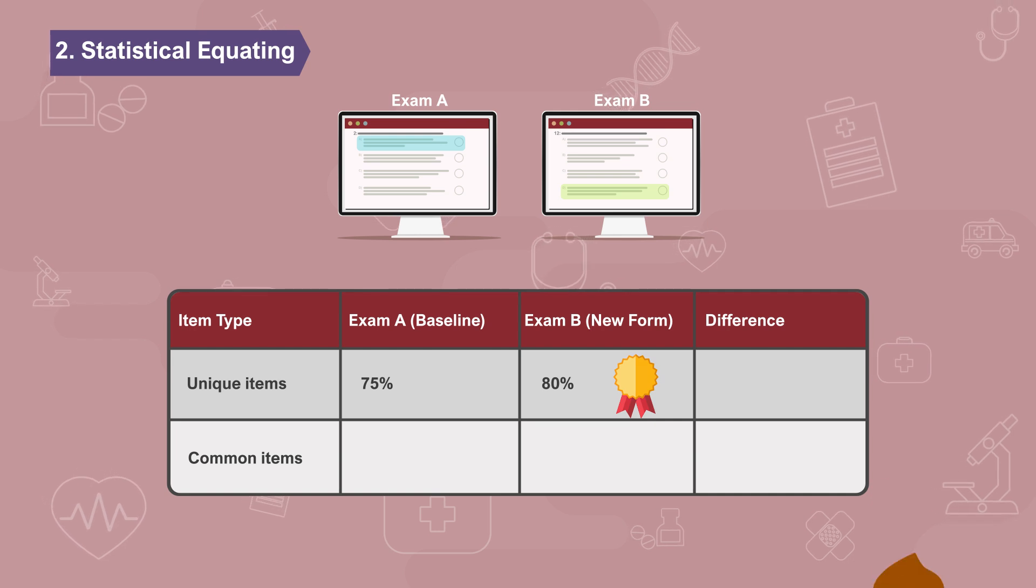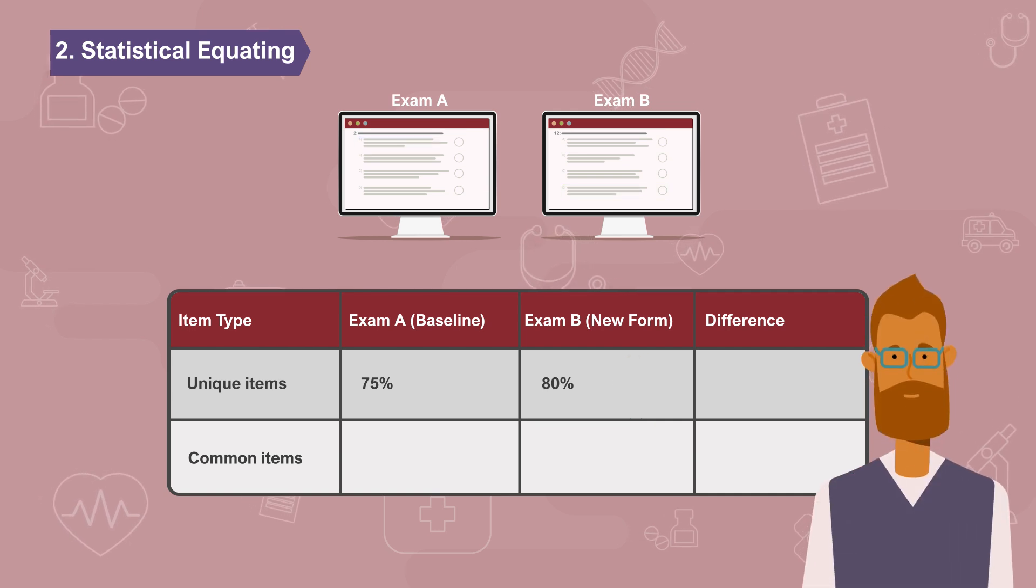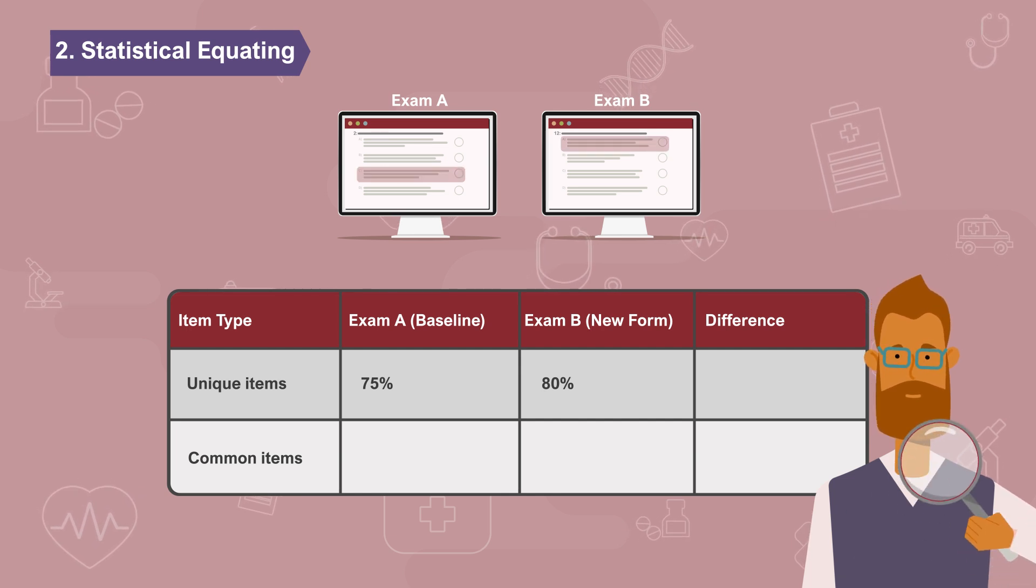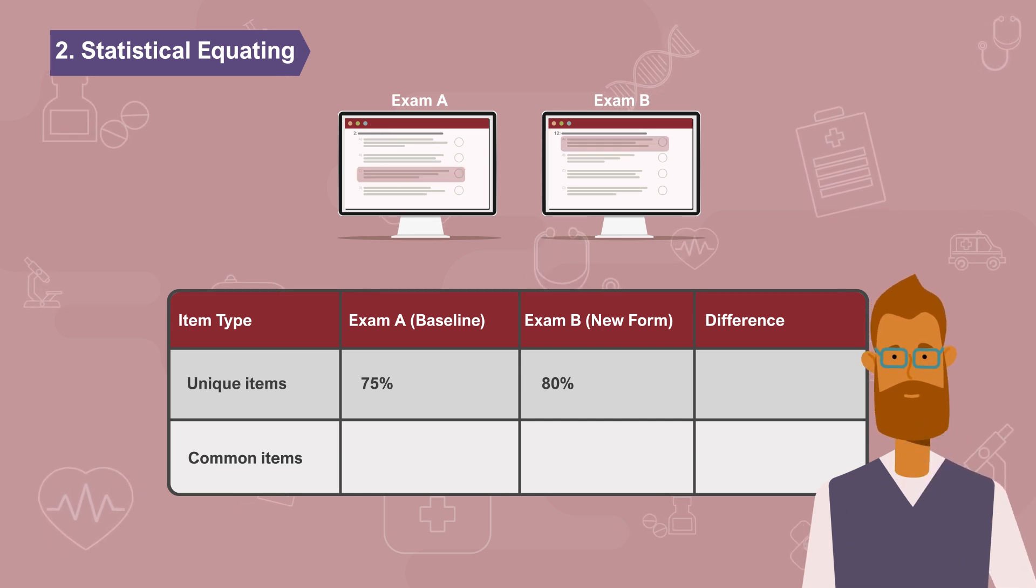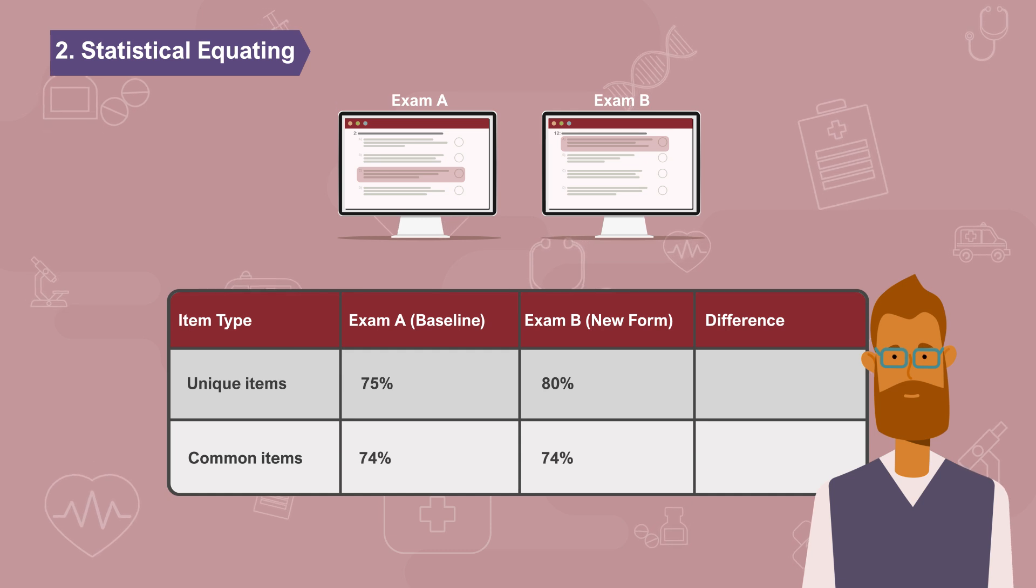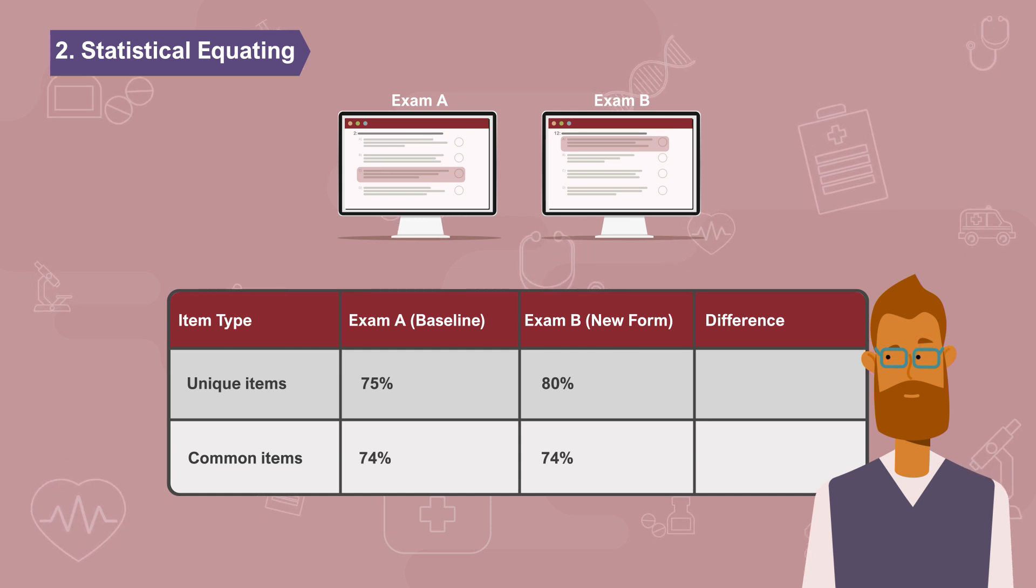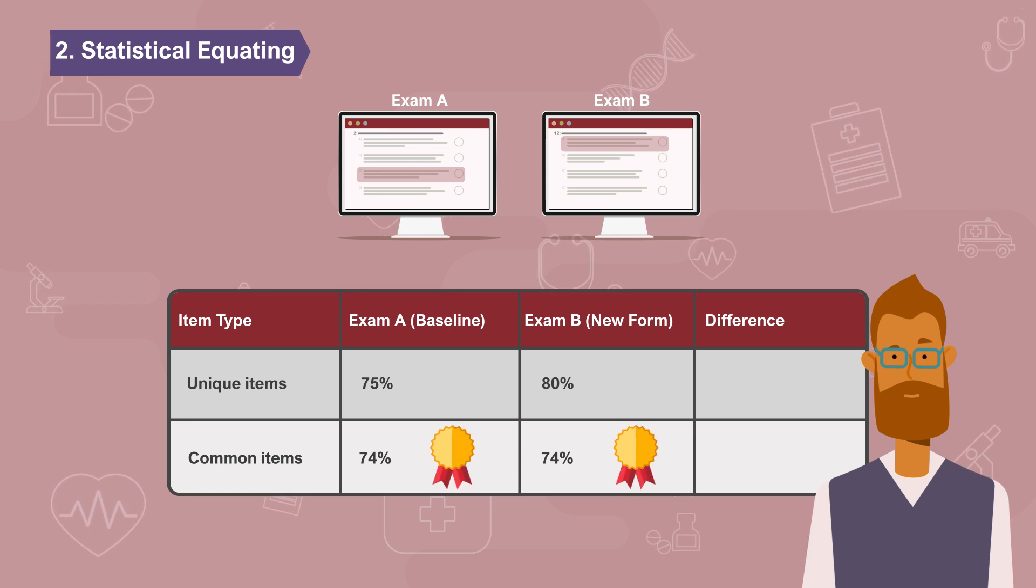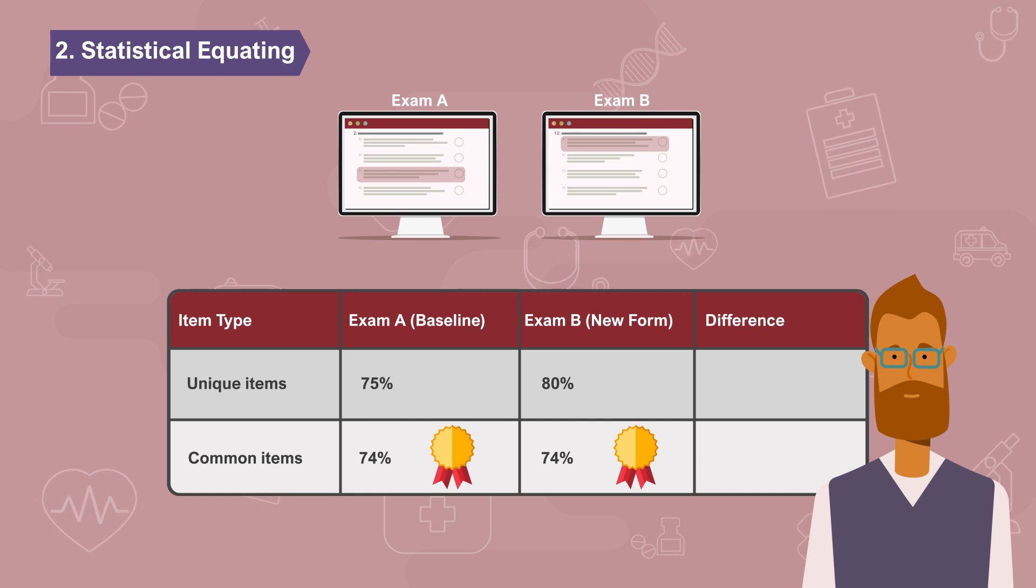But is that true? The psychometricians, COPPER's contracted testing experts, look at how candidates performed on the common questions. In our example, we can see that both groups had the same average on these. This indicates that candidates who wrote exam A and candidates who wrote exam B are equally strong, since they both got an average of 74% on the common questions.